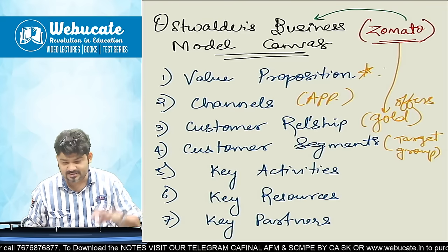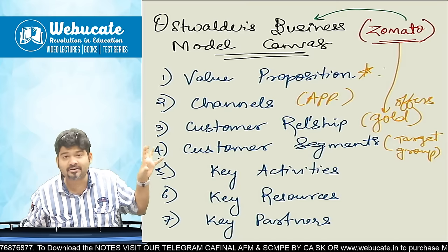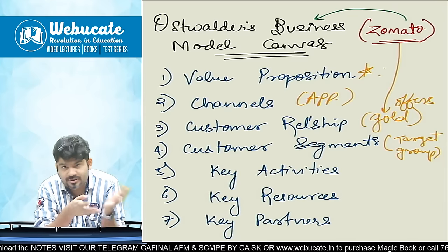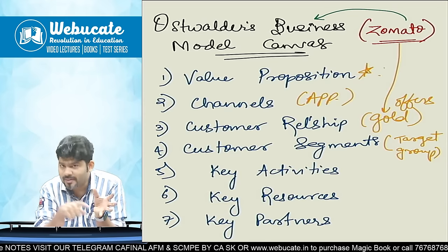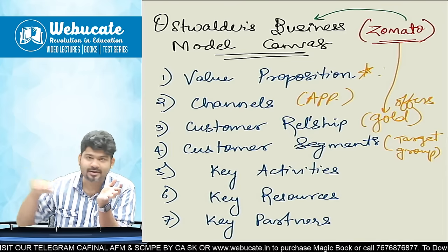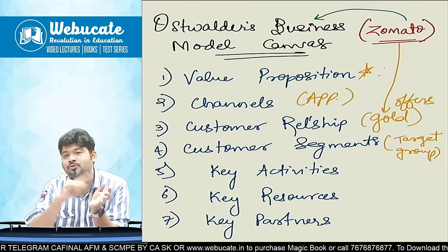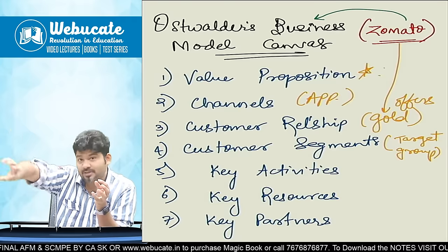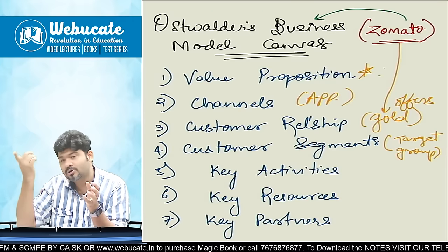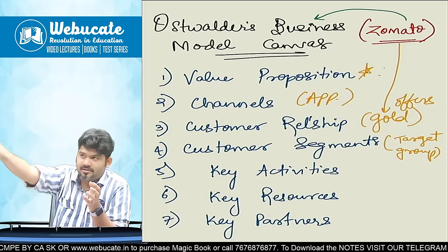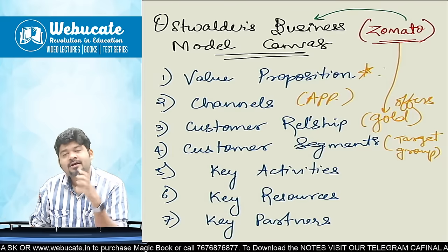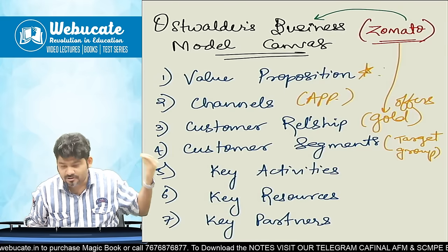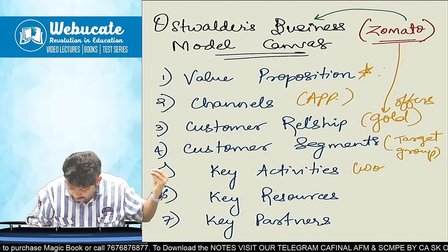Key activities. Now this is very important — what all activities Zomato has to do. So Zomato ne khud ke bhi kuch cloud kitchens chalu kiye. Doosra, Zomato ke jitne bhi outlets hain, unke saath they have to do a tie-up. Toh jab aap order karte ho, there is a commission which is passed on to Zomato. Then the delivery boy will come and deliver it to you. So all of that is a part of activity — the work that Zomato does.